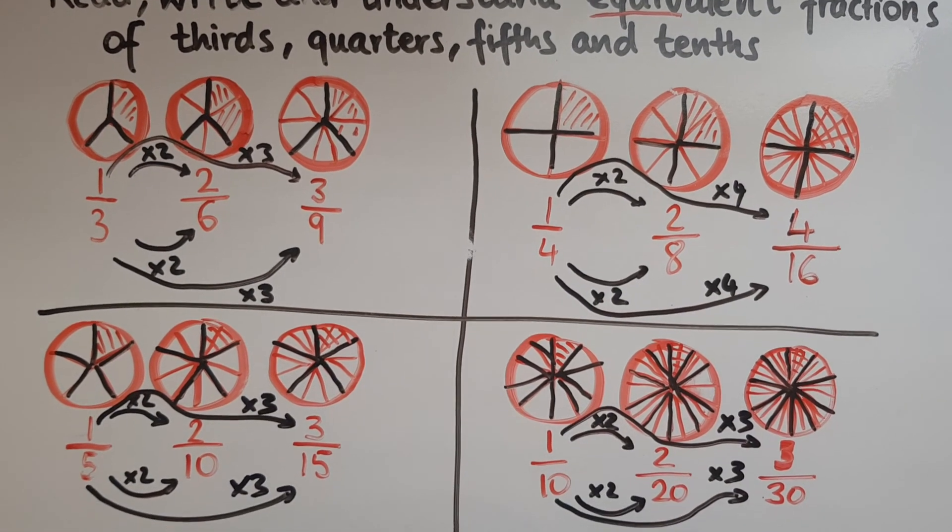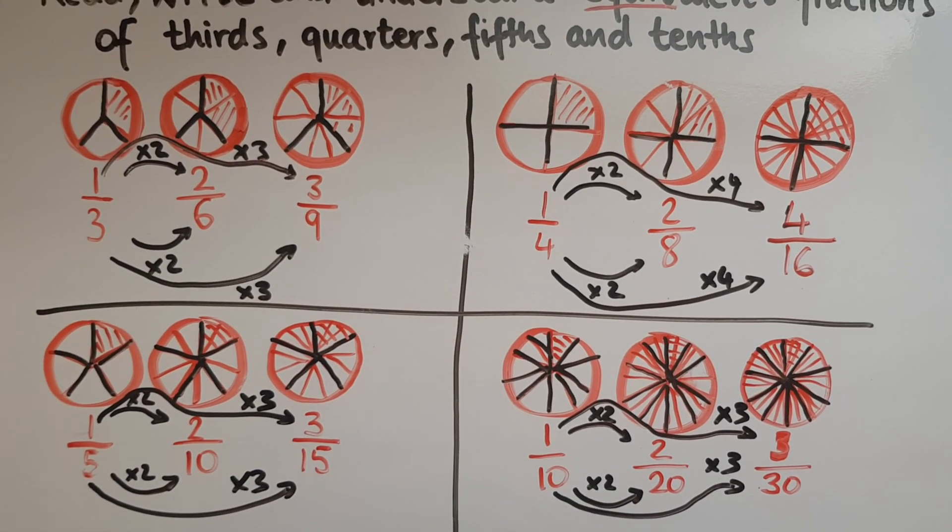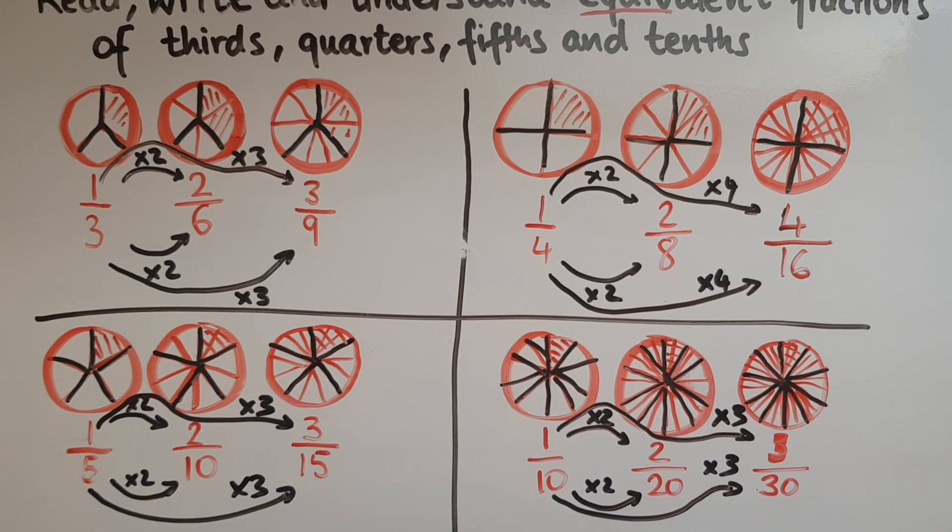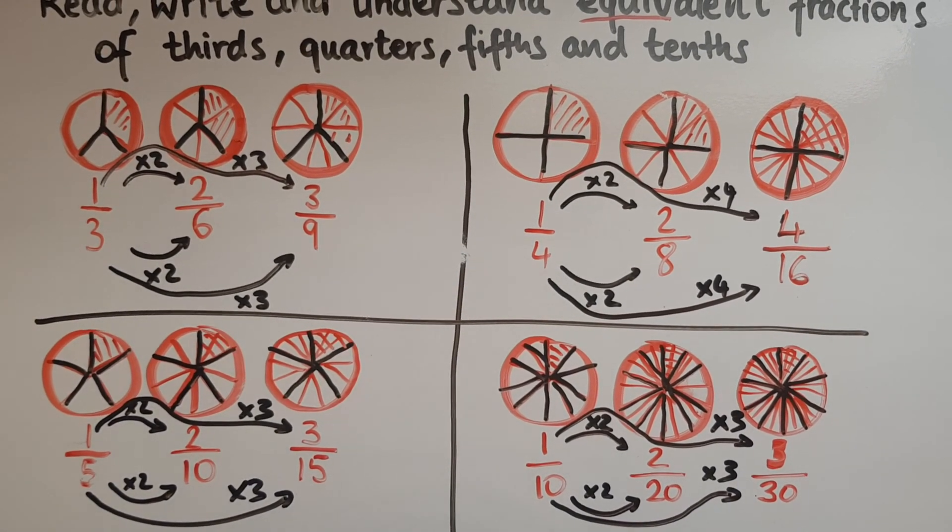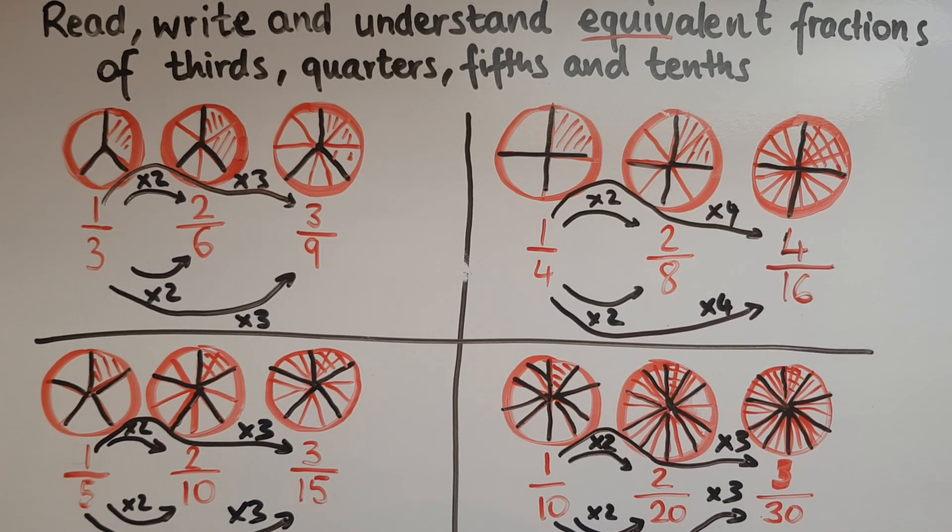So we could also multiply by six, seven, whatever number. If you multiply the top and the bottom as well by the same number, it will give you an equivalent fraction.